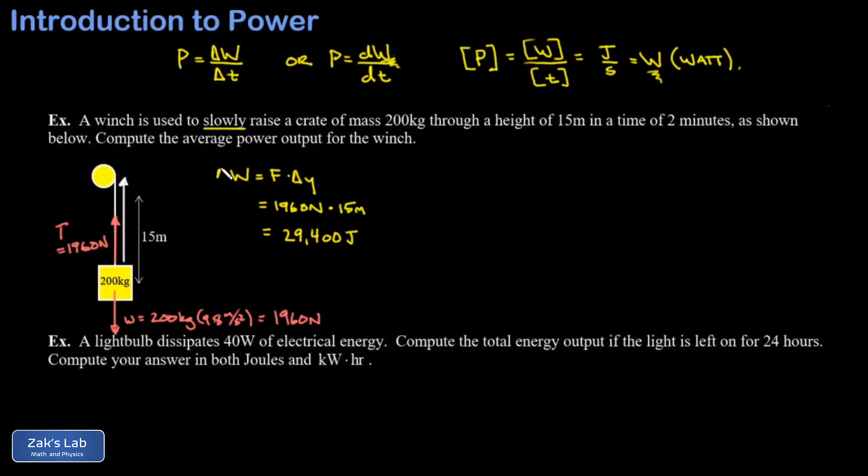Now that we have the amount of work done on this crate, we need to find the time it took to do that work so we can get the power. We'll use delta t for the time, and 2 minutes is 120 seconds.